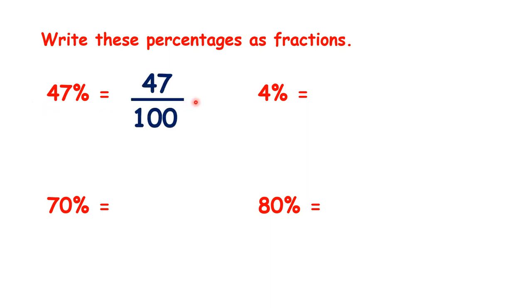We have 47 hundredths. Here we have 70 hundredths, which we could simplify to 7 tenths by dividing our numerator and denominator by 10.